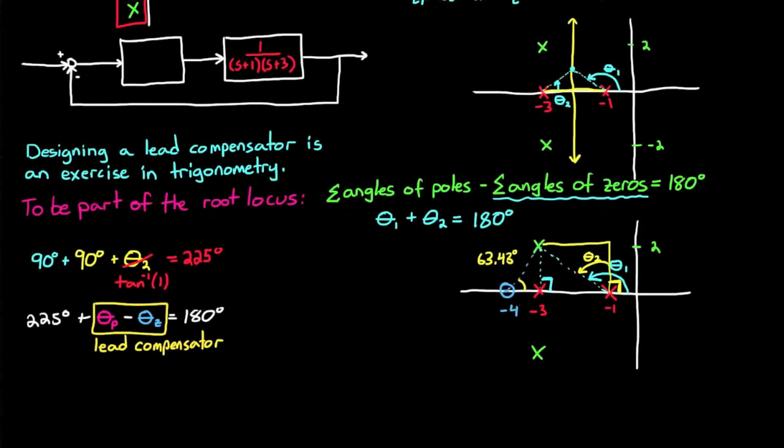And now that I've placed this zero, the pole can only go in one specific spot, specifically the spot where it makes an angle of 18.4 degrees with the root that we want. In this case, the math works out really nicely and the pole needs to be at minus 9. So my lead compensator for this particular problem would be s plus 4 over s plus 9. And if you plot the root locus using MATLAB or some other technique, you'll see that it in fact does go through the points that I want.